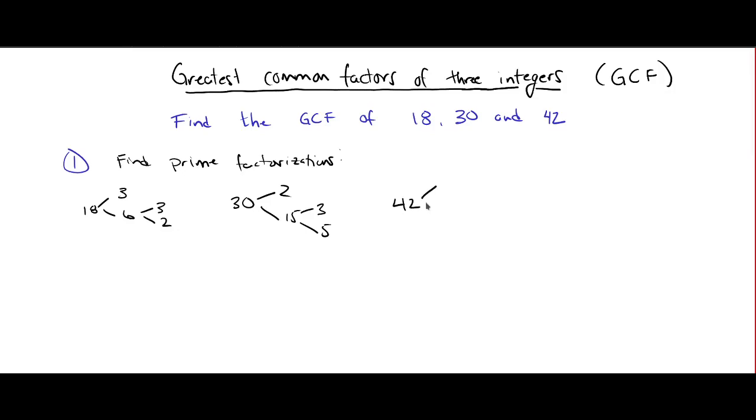And 42, that's 6 times 7, and 6 is 2 times 3. 2, 3, and 7 are prime, so we're done here.